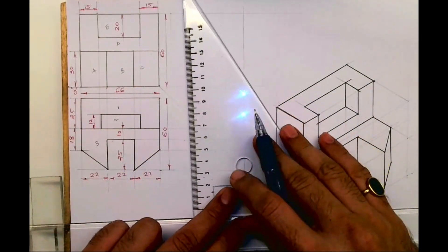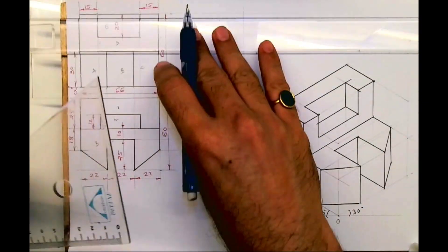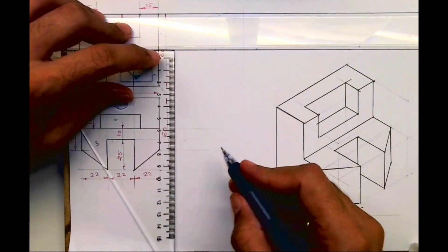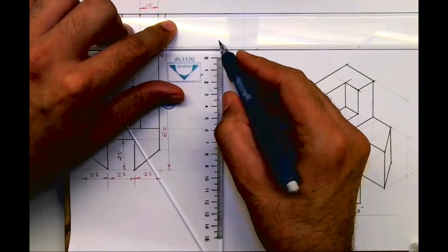Once you have some isometric with you, it becomes easier to copy side view. How to draw side view - that would be much easier if you draw isometric first.